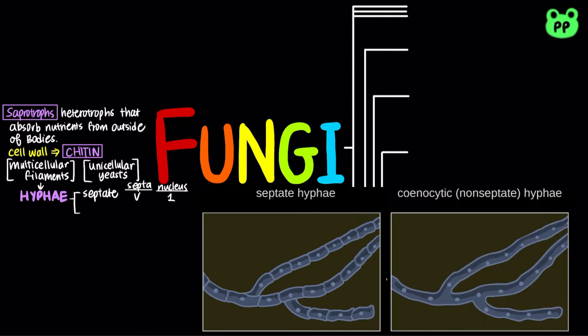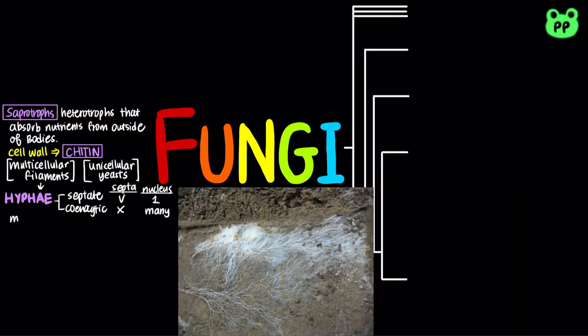On the other hand, coenocytic hyphae lack septa; therefore, they are multinucleated. Networks of branching hyphae are known as mycelia.